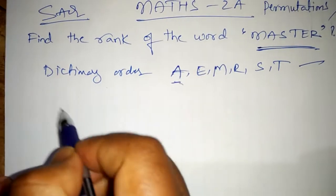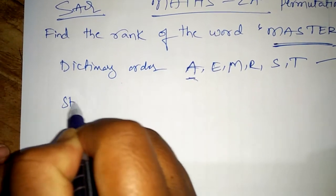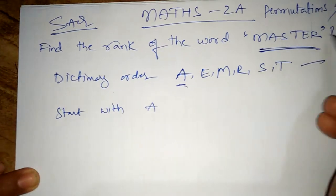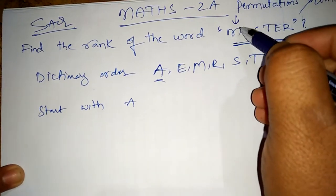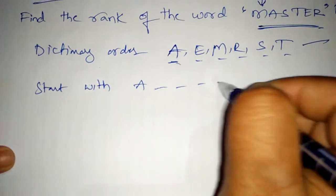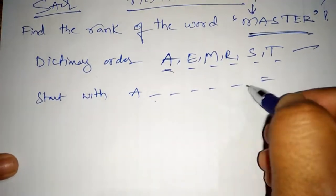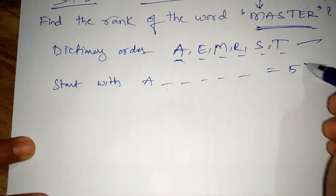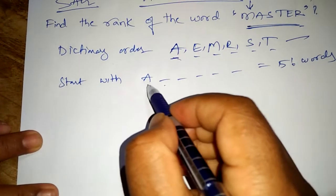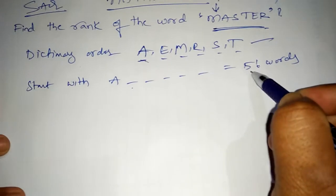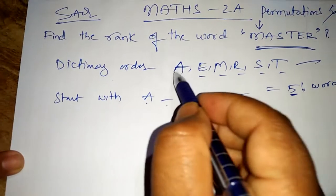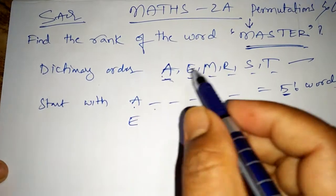If I start with the letter A — A is not matching the first letter of MASTER, which is M. Starting with A, we have five remaining gaps. Those five letters can be arranged in 5! = 120 ways. So there are 120 words starting with A.